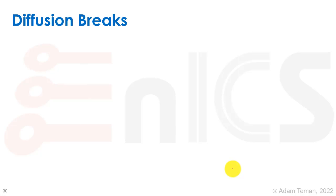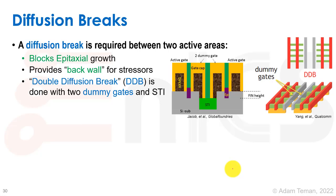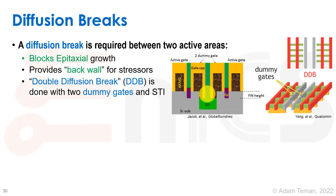An important point is diffusion breaks, which really came in with FinFET. A diffusion break is required between two active areas and does two main things: it blocks the epitaxial growth — so the epi being built on source and drain won't grow into the next transistor that's supposed to be disconnected — and it provides a back wall for the stressors. The stressors are pulling and pushing and need something to pull and push against to be effective. So we make an STI and put a dummy gate inside that provides both a back wall and blocks the epitaxial growth.